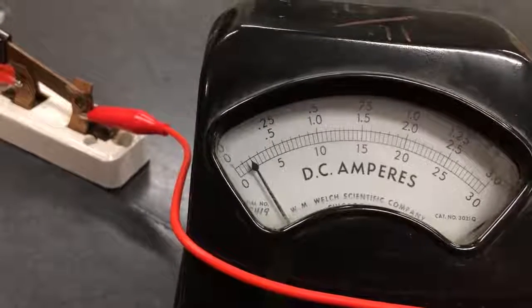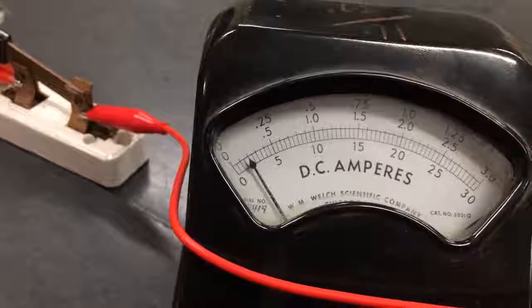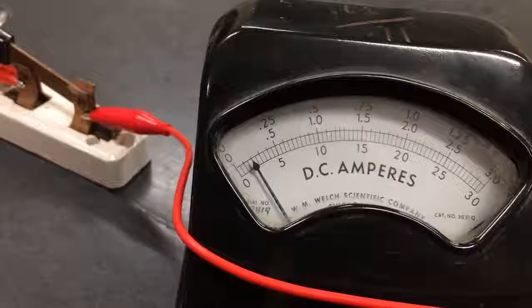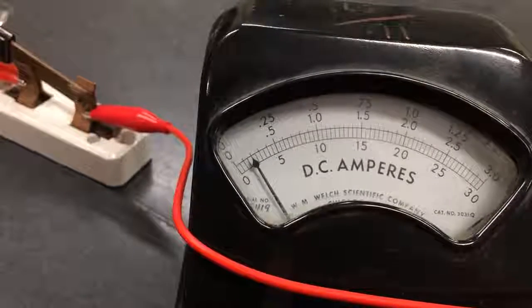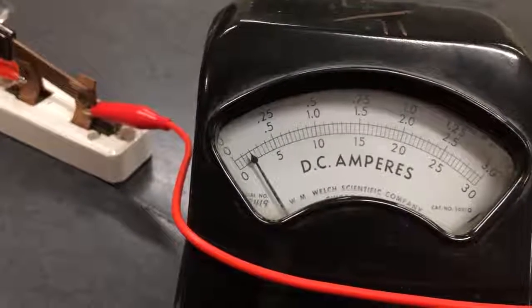So what we're going to do next is we're going to see how many coulombs and how many electrons that represents over a certain time period.